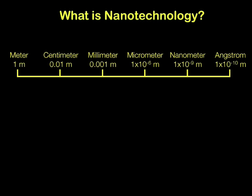Nanotechnology is an interesting field because it does not refer to any particular discipline. Rather, it refers to a particular length scale of interest. Below is a measure that demonstrates the difference between one meter and one angstrom, which is one ten-billionth of a meter.